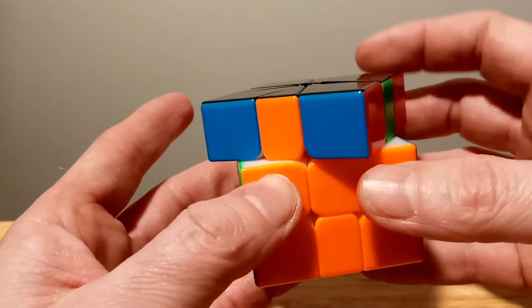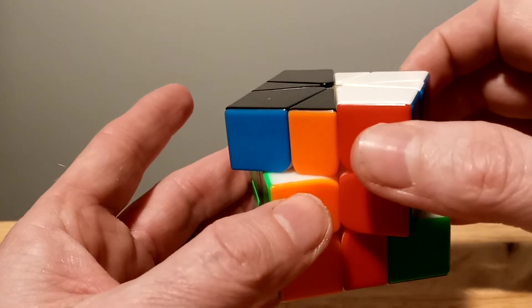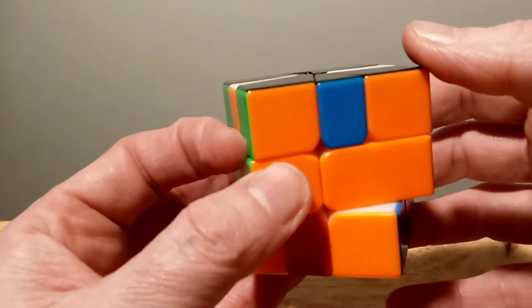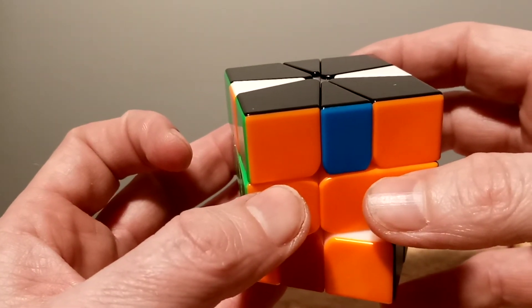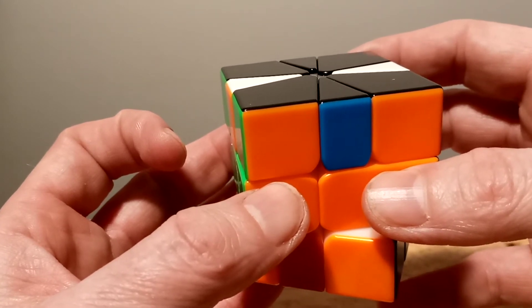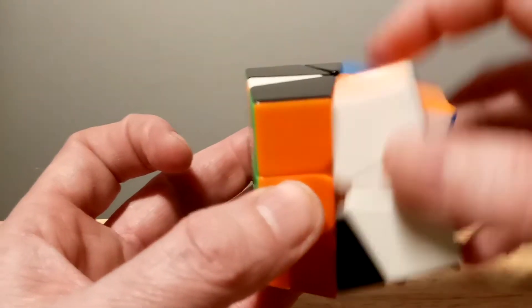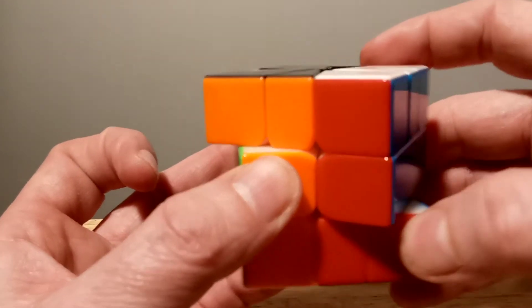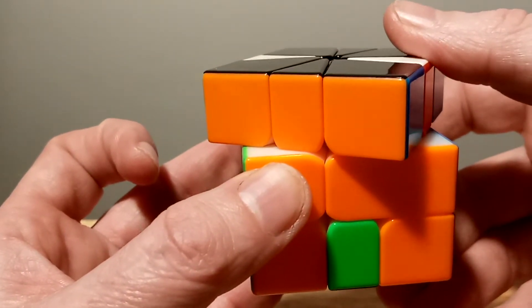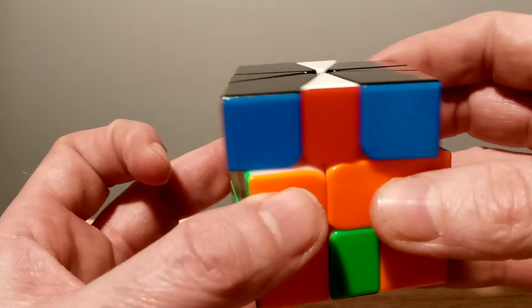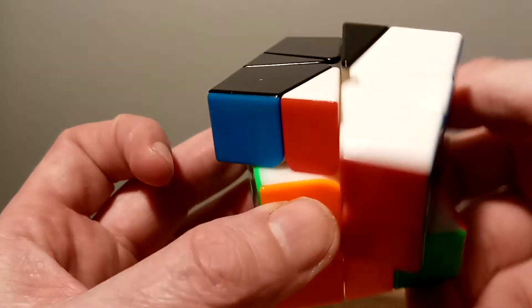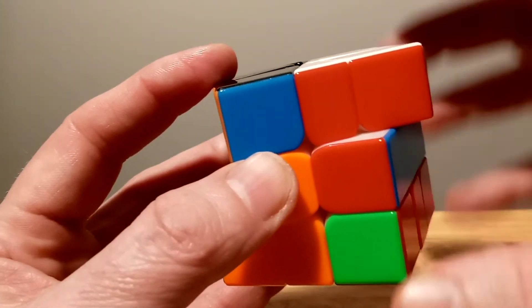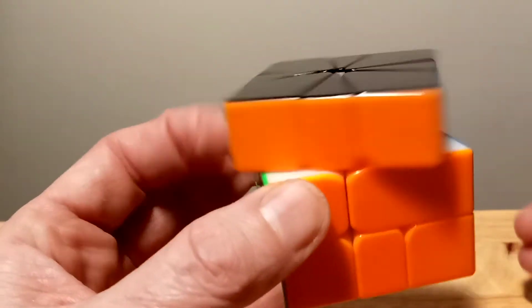And we just do the same move. 1, slice, negative 1, negative 1, slice. That's negative 3, slice, 1, and 1, slice. Then we do another 3, slice, then we do negative 1, negative 1, and slice. So we got it.